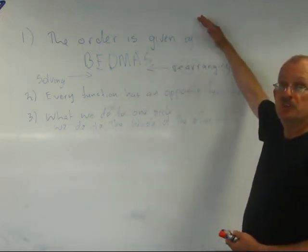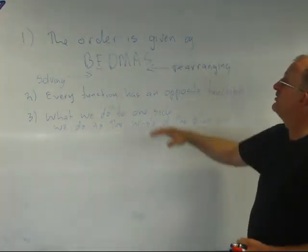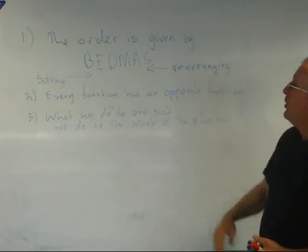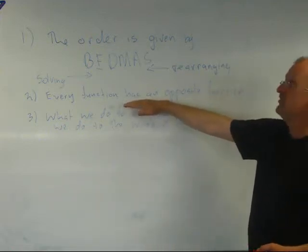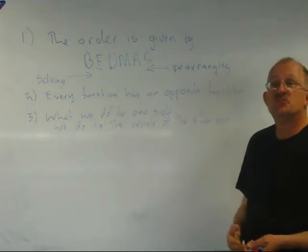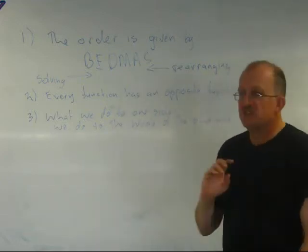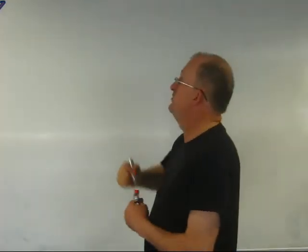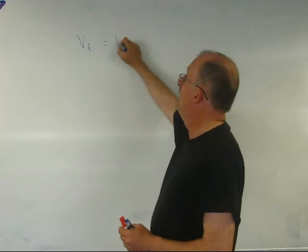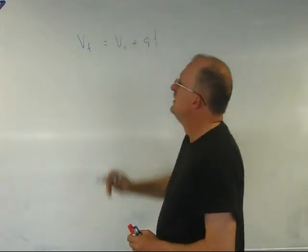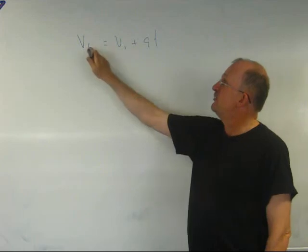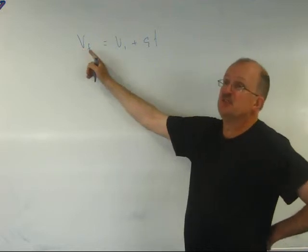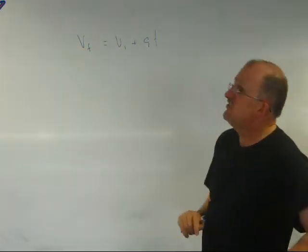We determine the order that we rearrange or shift operations across using BEDMAS or BODMAS depending on which country you're from. We know that every function has an opposite function. And what we do to one side. So let's actually try this on an example. So now if I have an equation like VF equals VI plus AT. Notice this is a little subscript. This end is below the line and smaller. That says this is a different type of velocity than that. But let's say we have an equation like that.